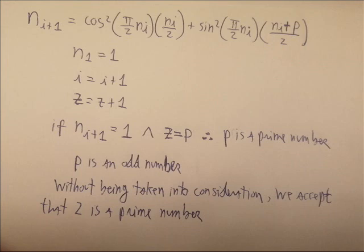The equation I use is this: n_i+1 equals cosine squared of pi over 2·n_i, multiplied by n_i over 2, plus sin squared of pi over 2·n_i, multiplied by (n_i plus p) over 2. We can simplify this equation with the terms cosine squared and sin squared, but with n1 equals 2, i equals i+1, z equals z+1, and if n_i+1 equals 1 and z equals p, then p is a prime number.